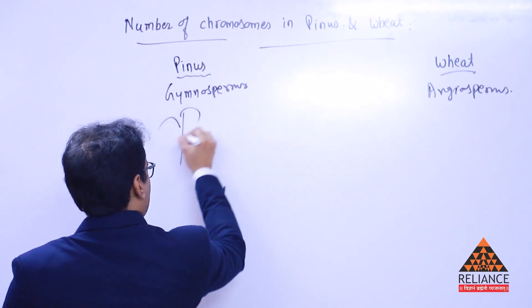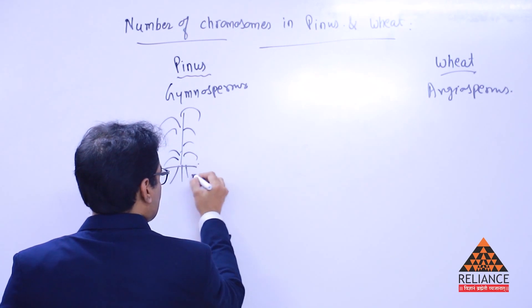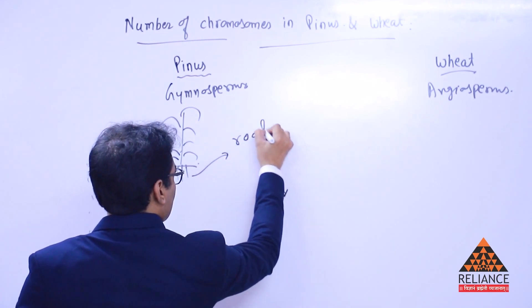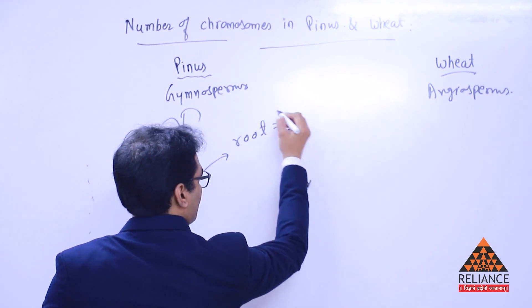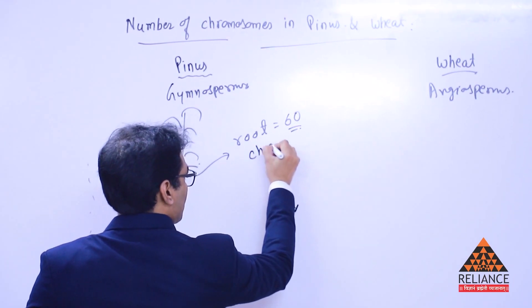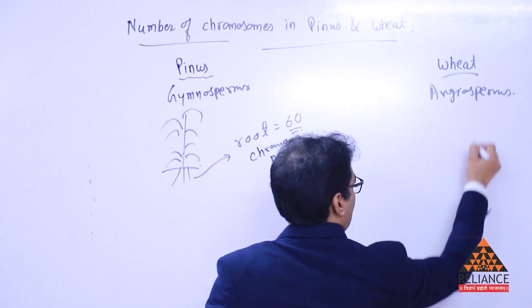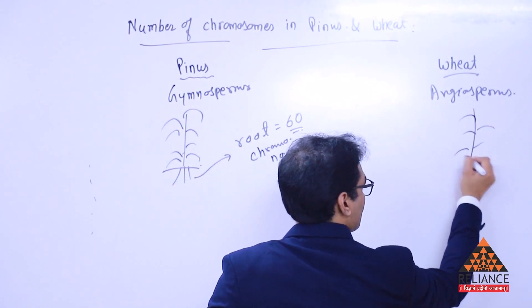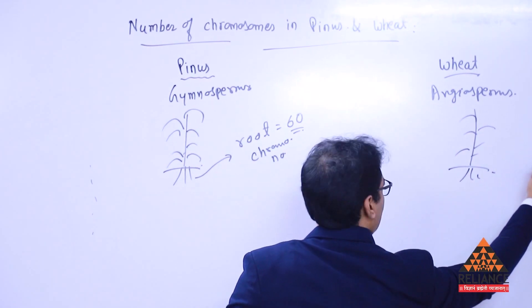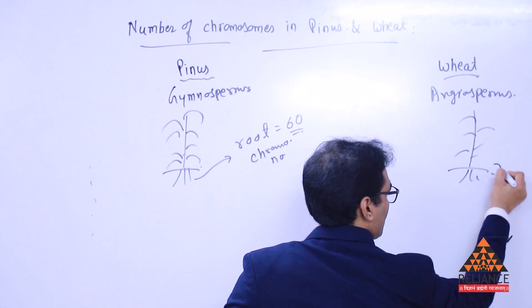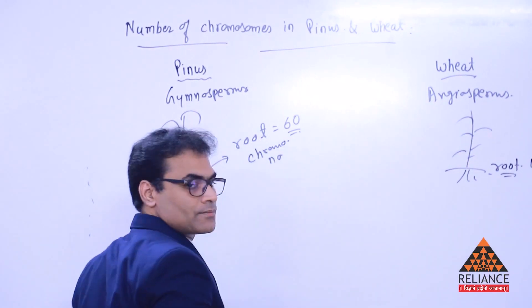Now, this particular plant, sometimes given in the books, they ask the question that their root cells have 60 chromosomes. This is about root chromosome number. And the wheat plant, imagine the number of chromosomes in its root is given as 42. Chromosome number in the root of this wheat plant.